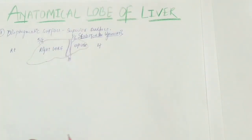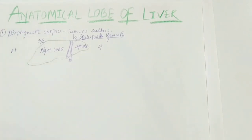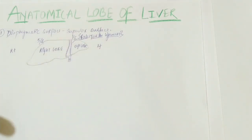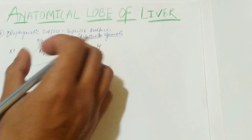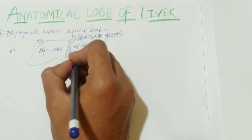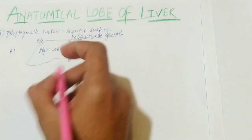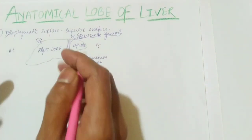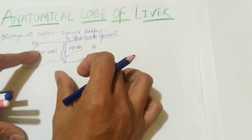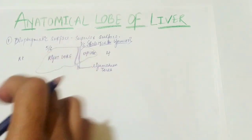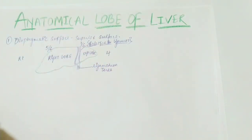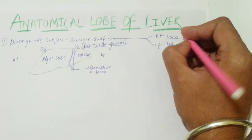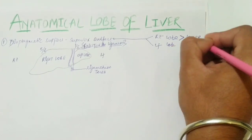In the physiological or functional lobe division, the right and left lobes are actually equal — just remember this point. Below the falciform ligament there is a fibrous cord, which is the remnant of the umbilical vein from fetal life. It is obliterated after birth and this remnant is called the ligamentum teres, located on the inferior surface, coming from the umbilicus area.